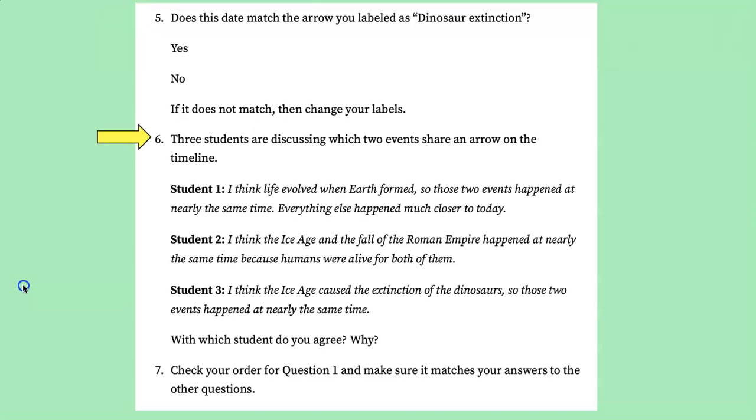So three students are discussing which two events share an arrow on the timeline. Now I already just gave you the answer, but if you went and did this ahead of time, hopefully you figured out that student 2 was correct and that the Ice Age and the fall of Roman Empire happened at nearly the same time when it comes to geologic time.